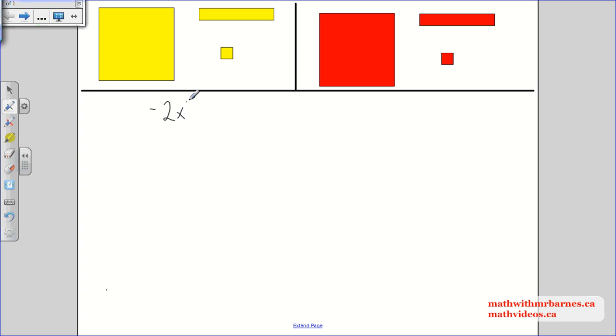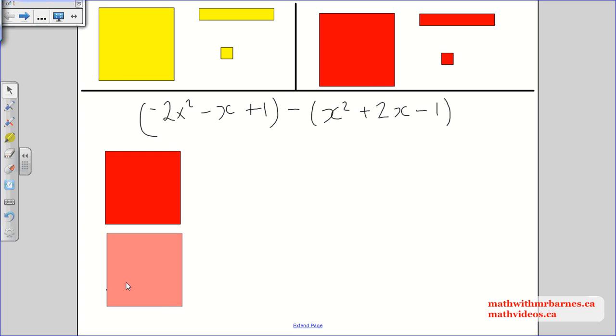So let's see. Negative 2x squared minus x plus 1 subtract x squared plus 2x minus 1. So first step, make this algebra tile. So negative 2x squared minus x plus 1. So that's that.